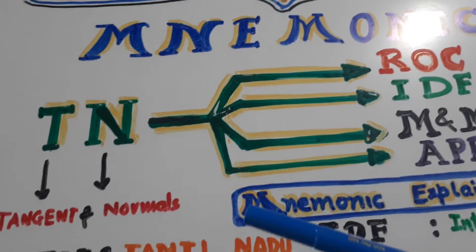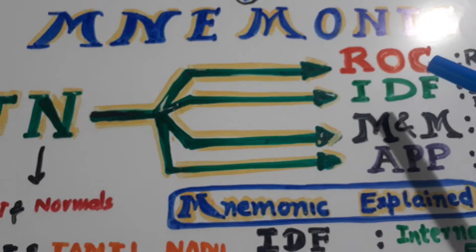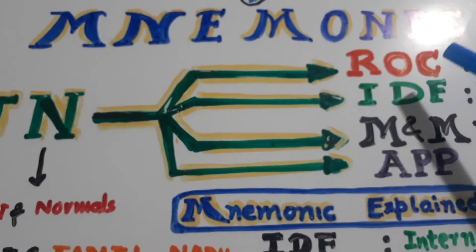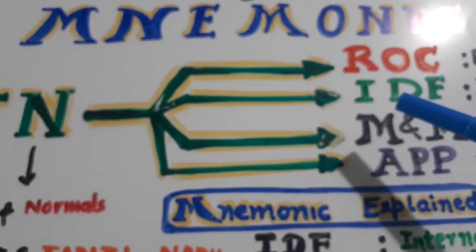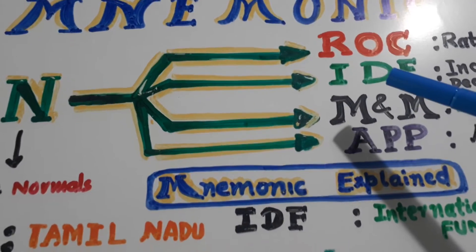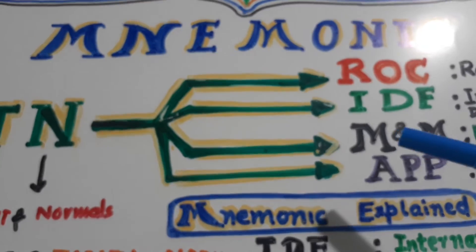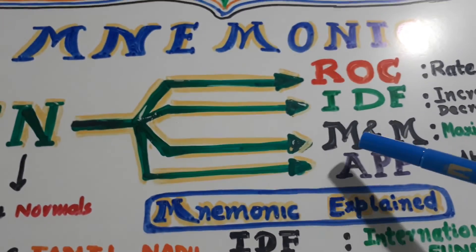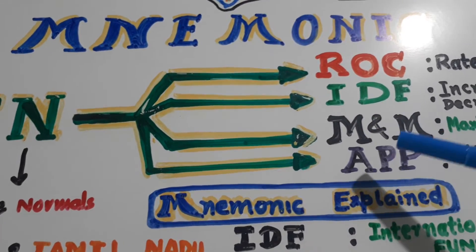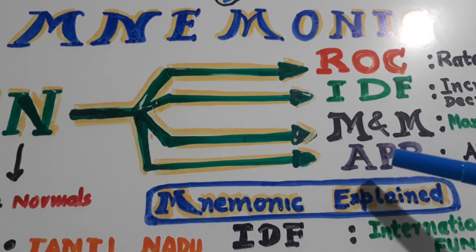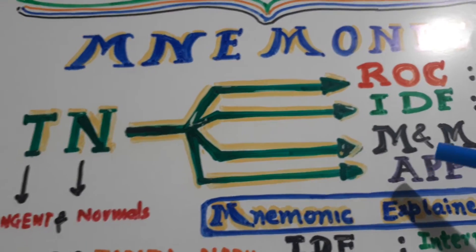Now see, Tamil Nadu has an office whose name is the Registrar of Companies. The second office is the International Development Fund. The third office is Mahindra and Mahindra. The fourth office is AP. So these are four there.